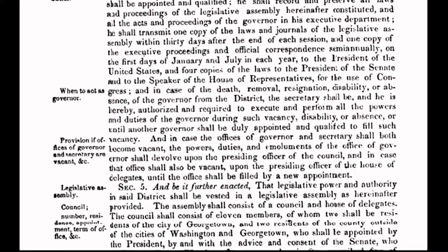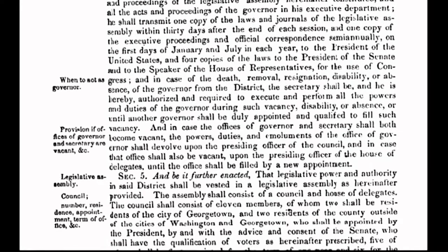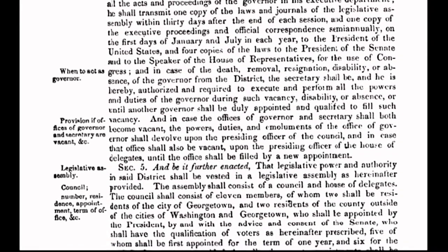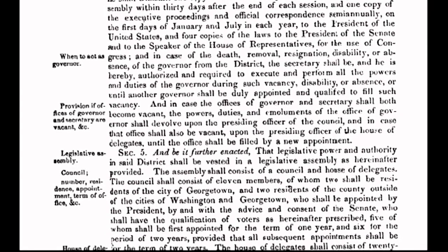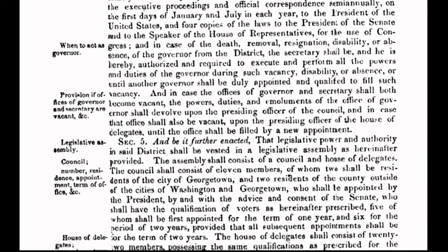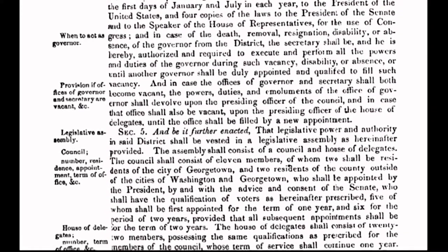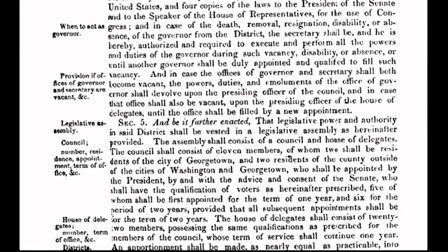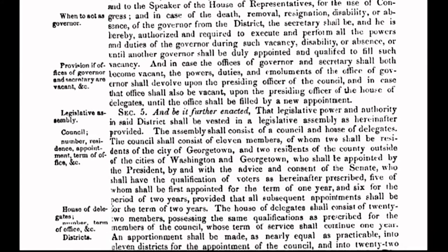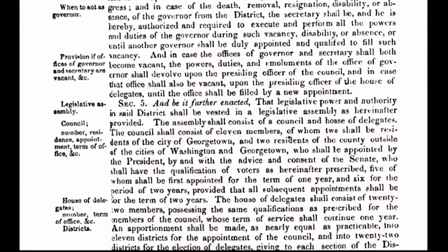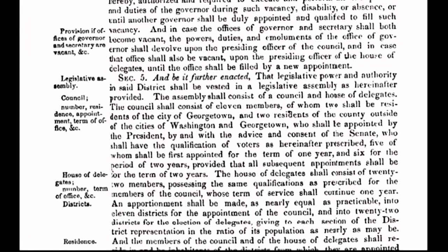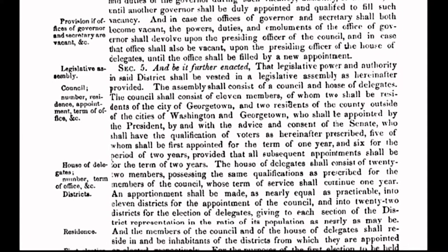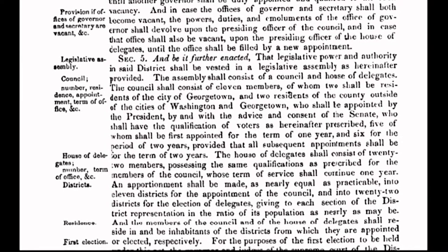It is important to keep in mind that according to the original constitution, only we the people are sovereign. The government is not sovereign. Our original declaration of independent states — government is subject to the consent of the governed, and that's us. It doesn't take a constitutional historian to figure out that the United States government has not been subject to the consent of the governed since long before you and I were born. Rather, the governed are subject to the whim and greed of the corporation, which has stretched its tentacles beyond the 10-mile-square parcel of land known as the District of Columbia.